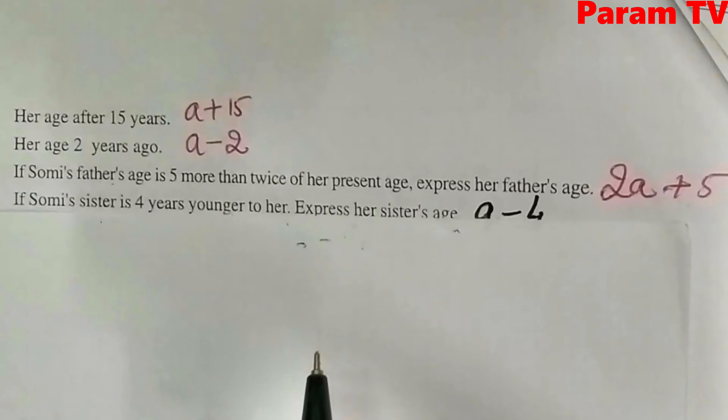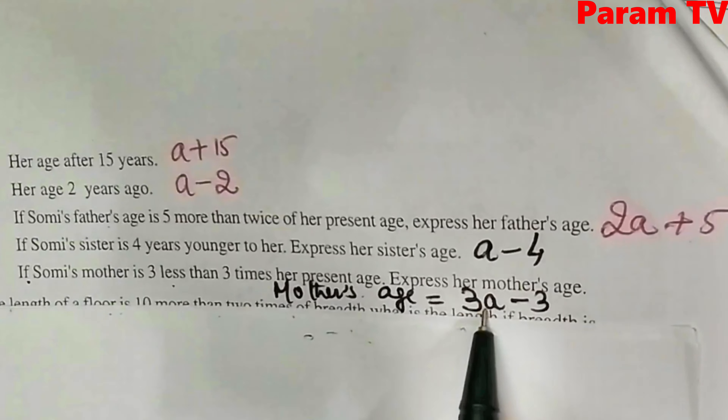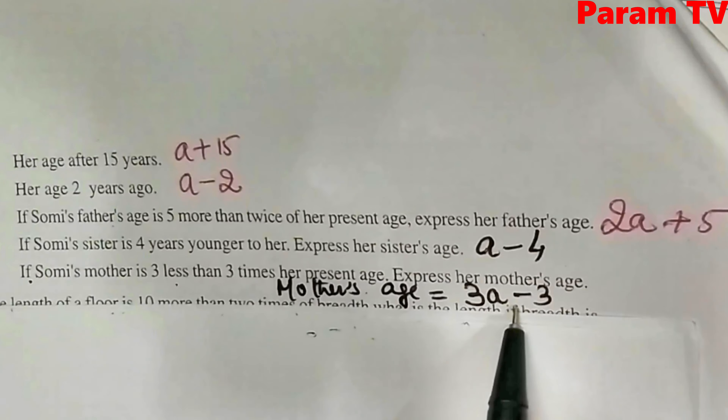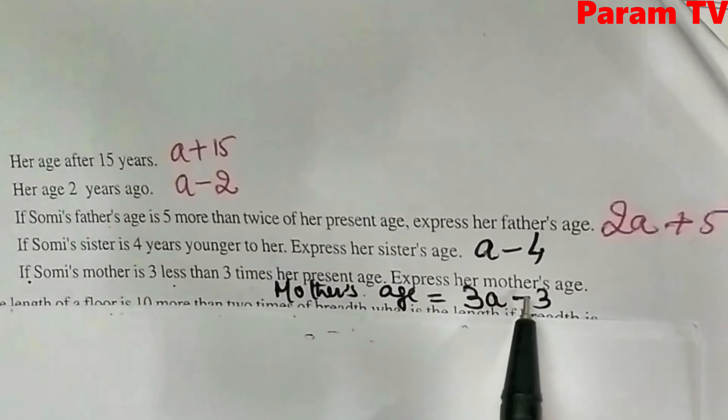If Sumi's sister is 4 years younger to her — younger means smaller, so subtract 4 from Sumi's age: A minus 4. If Sumi's mother's age is 3 less than 3 times her present age — first multiply age by 3 to get 3A, then subtract 3 — so mother's age is 3A minus 3.